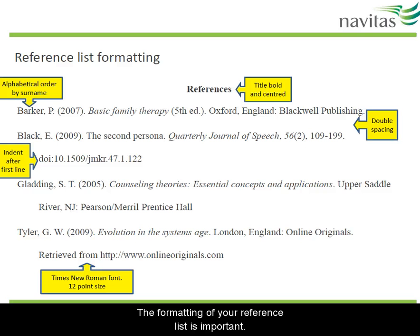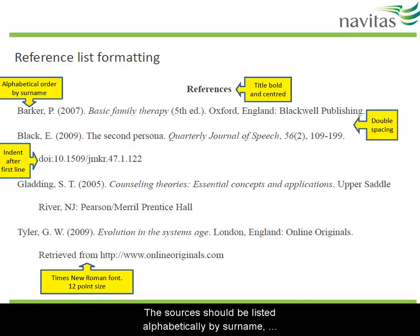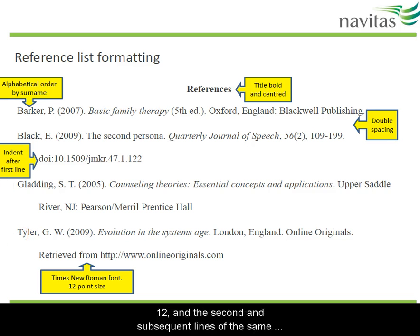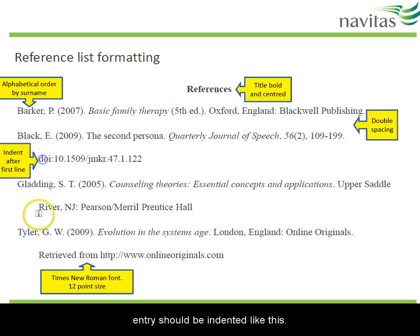The formatting of your reference list is important. You need a title, which is 'References'. The sources should be listed alphabetically by surname. Everything is double spaced. Times New Roman font, size 12. And the second and subsequent lines of the same entry should be indented like this.